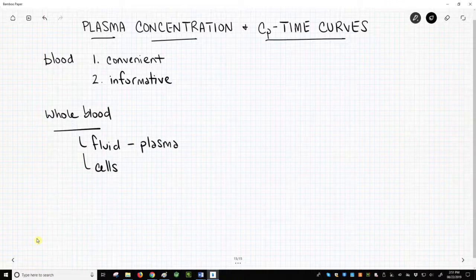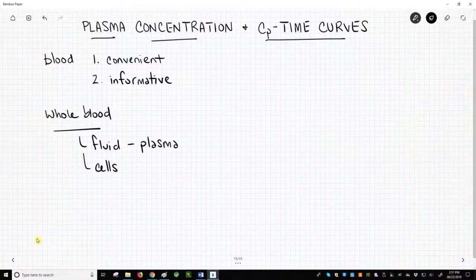Plasma is then analyzed for the drug to give a plasma concentration, or CP. So how does CP vary with time in the body? Let's look at a typical CP time curve for an oral drug.